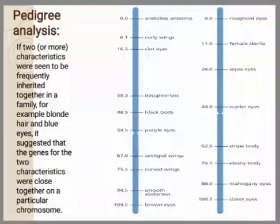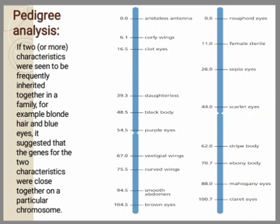The second way of genetic mapping is pedigree analysis, in which scientists study the family history for the expression of some traits. Traits which are found continuously being expressed together or absent together — the genes of such traits are considered to be linked, and thus their relative position on the chromosome is predicted. As the diagram shows a genetic map of the chromosome of fruit fly, the names of genes are on the right side and on the left side are the distances between these genes. These maps have been constructed using pedigree analysis tools.